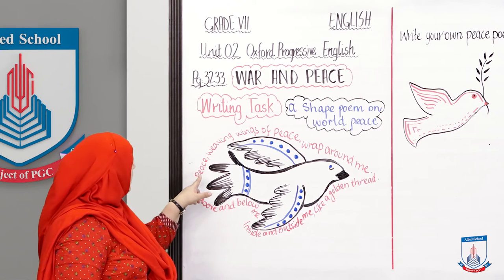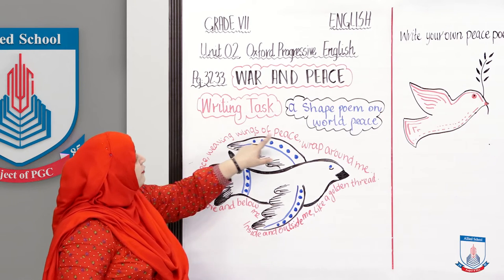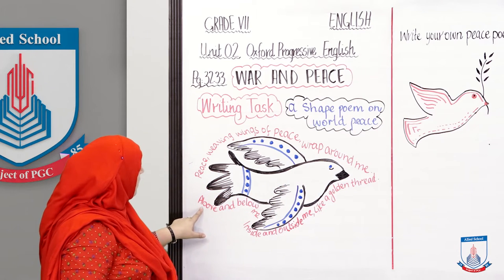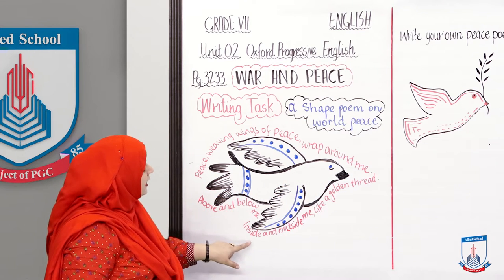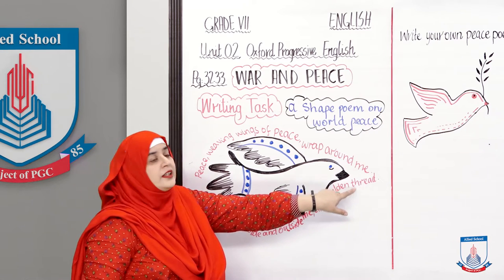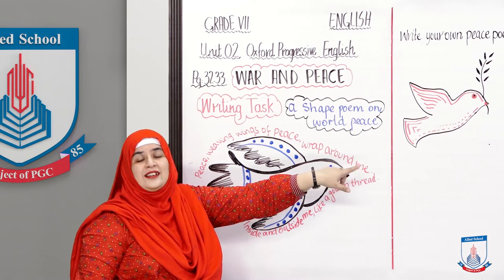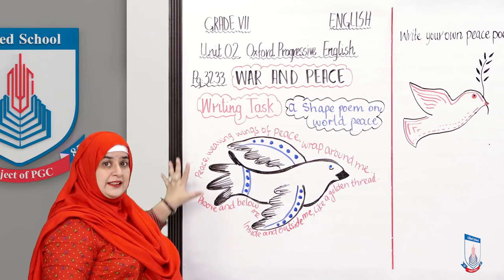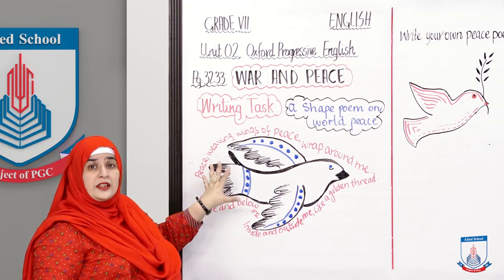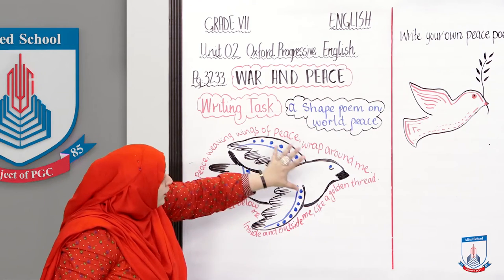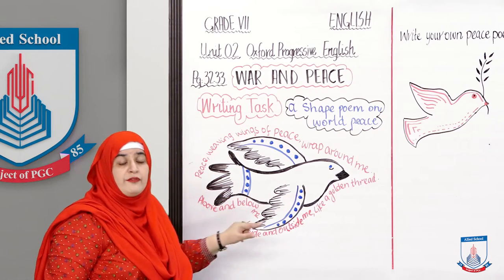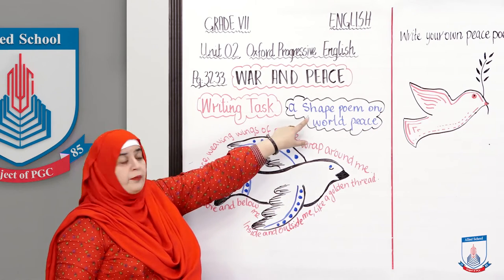Let's read together: Peace, weaving wings of peace, wrap around me, above and below me, inside and outside me, like a golden thread. So this is peace that is surrounding this specific dove. Aur yeh poori poem is tareeqe se likhi hoti hai — ek shape bana ke, us shape ke chaaro taraf. Isi ko kehte hain shape poem.